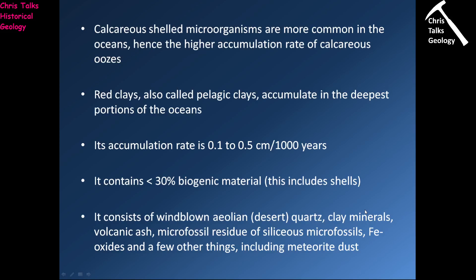Obviously we have volcanic ashes — a very large volcanic eruption will throw ash over quite a large area. We have microfossil residue, so bits of shell from the little organisms that live at the top of the water column. We also have iron oxides contributed by submarine venting. And every once in a while, a few other things including meteorite dust — material actually coming from space. So these pelagic clays are a mixture of very fine material from a range of different sources, and no one source really dominates over the other.